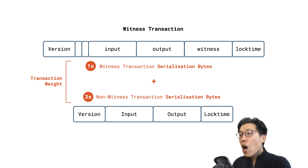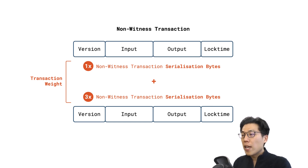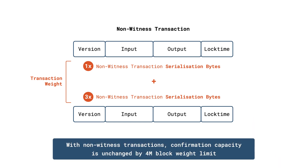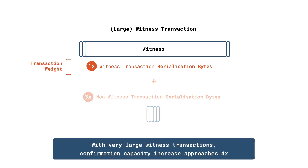For a non-witness transaction, or a witness transaction with a proportionally small witness, its weight approaches the fourfold of the old serialization byte size. The 4 million weight limit applied to a block filled with such transactions is equivalent to the previous 1-megabyte block limit and does not yet result in higher confirmation capacity. However, for a witness transaction where the witness is a proportionally large part of the transaction, the weight is approximately just a quarter of a non-witness transaction with comparable inputs and outputs. So if all the transaction data were mostly witness data, the 4 million block weight limit now approaches a 4 times block confirmation capacity increase compared to non-witness transactions.